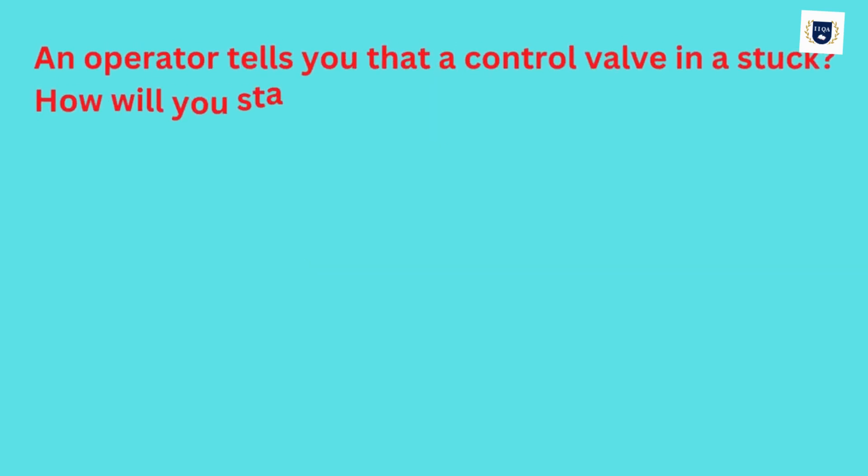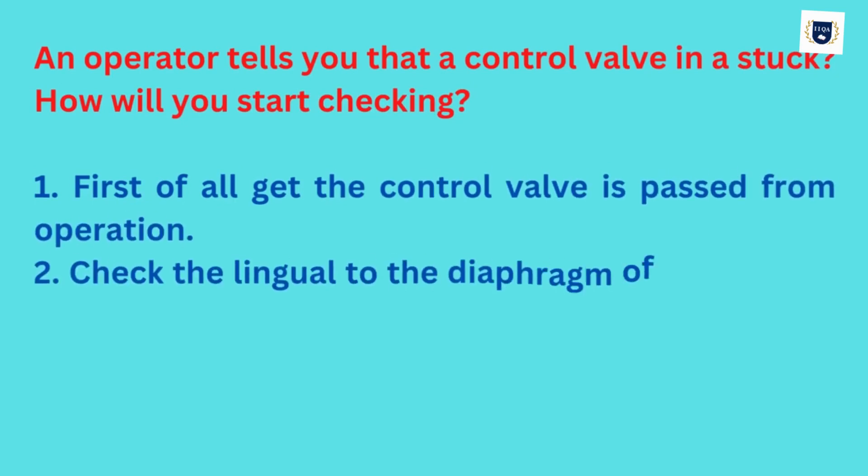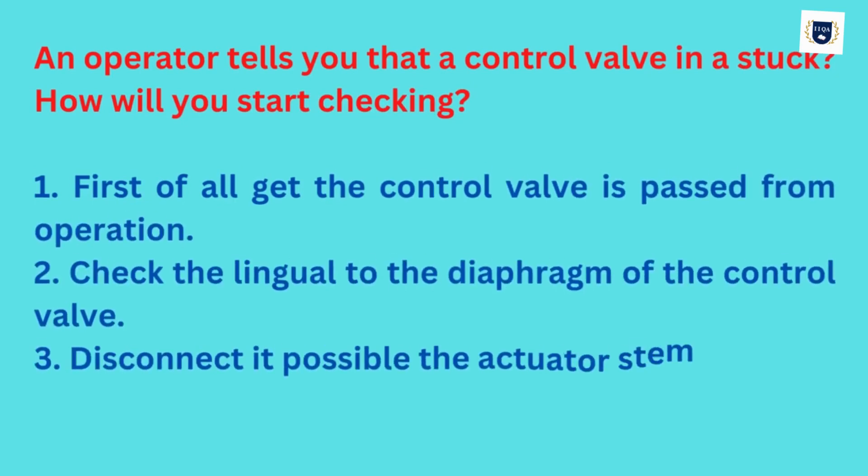An operator tells you that a control valve is stuck. How will you start checking? First of all, get the control valve bypassed from operation. Check the linkage to the diaphragm of the control valve. If possible, disconnect the actuator stem from the control valve stem.